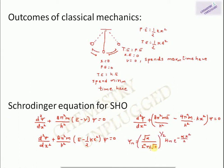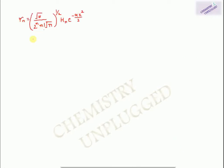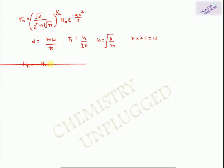The final wave function equation is: ψ = [α/(2ⁿ n! √π)]^(1/2) · Hₙ · e^(−αx²/2), where α = mω/ℏ, ℏ = h/2π, and ω = √(k/m), also known as angular frequency with ω = 2πν. Hₙ are the Hermite polynomials.